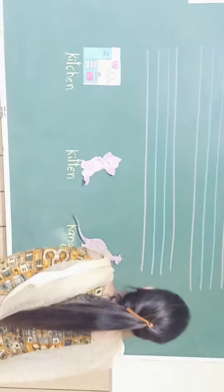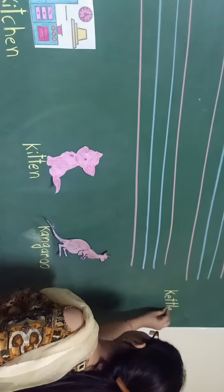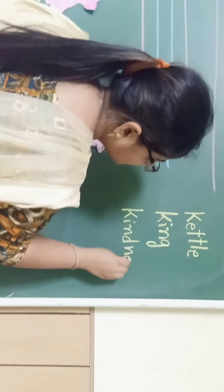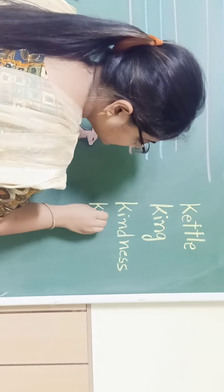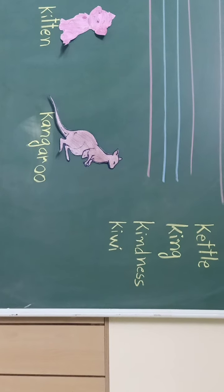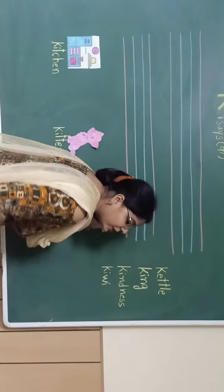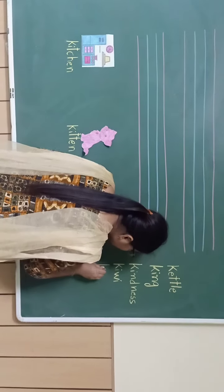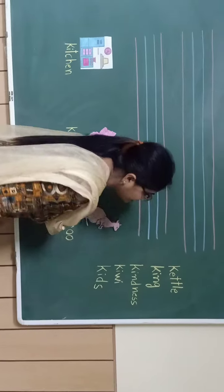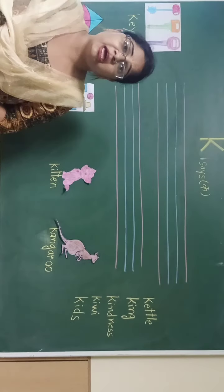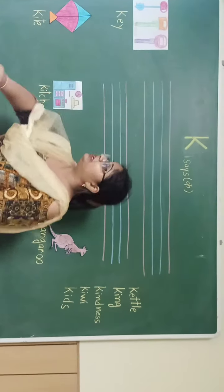Like Kettle, King, Kindness, Kiwi. Think about the words that start from letter K and tell me. You all are small kids. So these all are the things that start from letter K. There are so many things that start from letter K. Find out with the help of your parents the things that start from letter K.